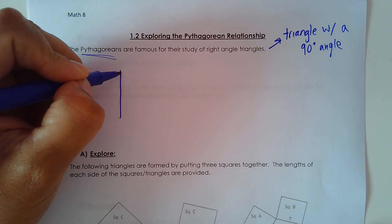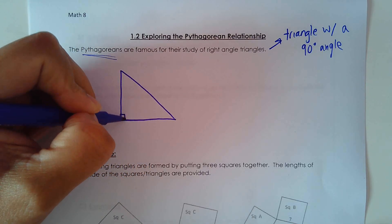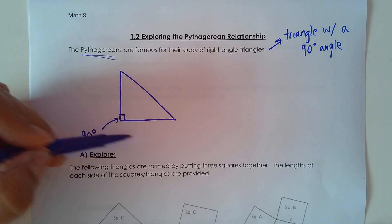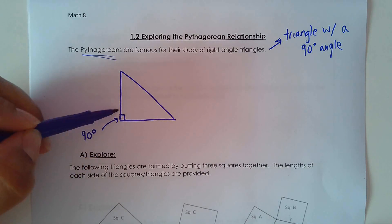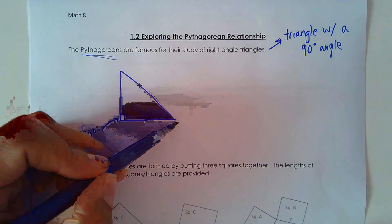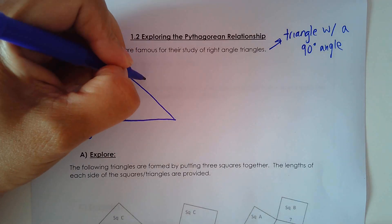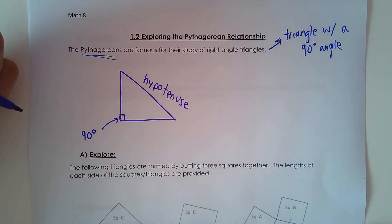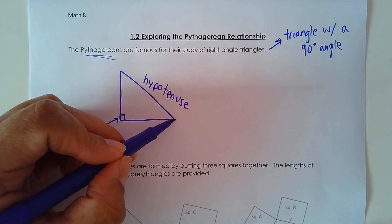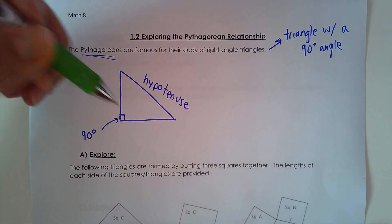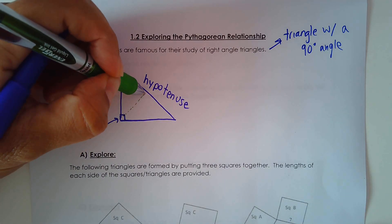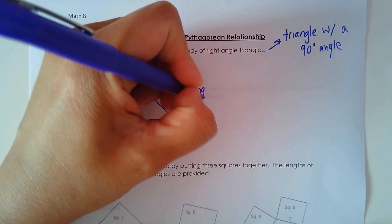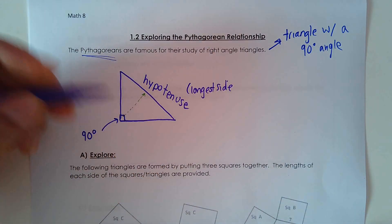I'm going to draw out a triangle. This symbol here indicates that it is 90 degrees. This is an example of a right-angled triangle because one of the angles is 90 degrees. The longest side in this triangle is called the hypotenuse. Say that word out loud — hypotenuse. It's always the longest side in a right-angled triangle and it's always opposite the 90-degree angle. If you take the 90-degree angle and follow it to the opposite side, you would have the hypotenuse. The other two sides are called legs.